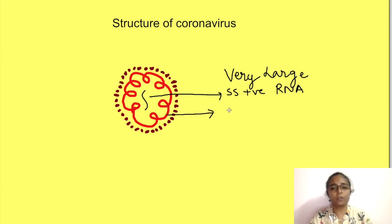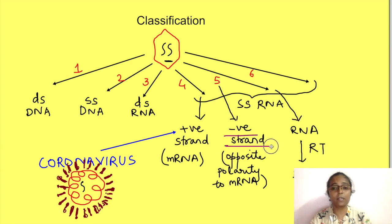Secondly, the nucleocapsid of the coronavirus has helical symmetry. Now this is an exception since generally helical symmetry is present in negative strand RNA viruses, i.e., in class 5th, while positive strand RNA viruses generally have icosahedral symmetry. So that is also one unique feature of coronavirus.